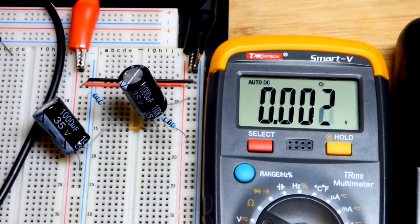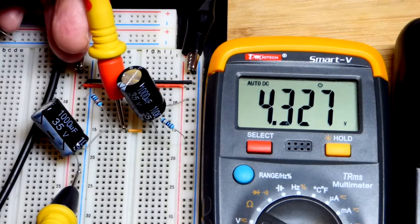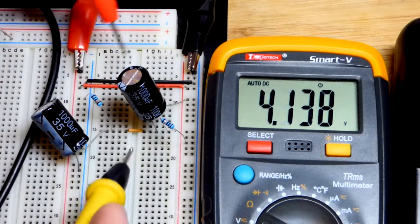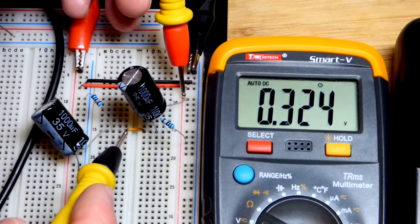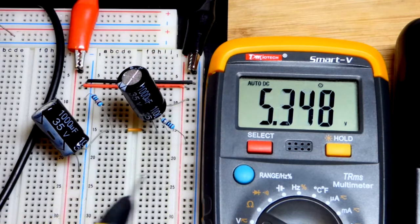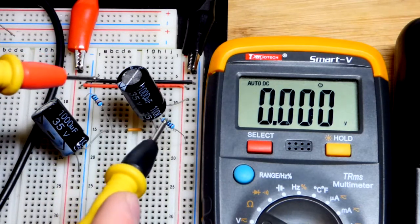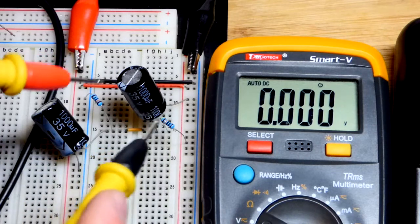So now about two or three minutes went by somewhere around there and there you can see now we got up to about 4.32, still going up. And this one's still going down right there. We're closing in to where they're both about five. We could speed this up quicker if we use lower value resistors right there.